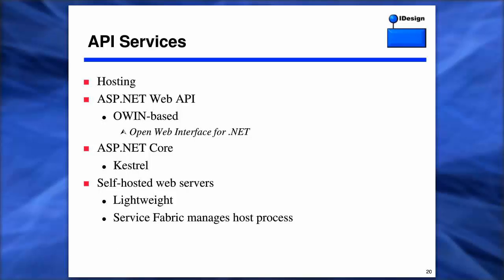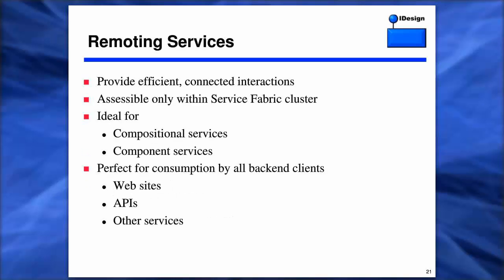Briefly on hosting specifics: ASP.NET Web API uses OWIN-based Katana-based hosting, which many of you are already familiar with. ASP.NET Core introduces the new hosting model for Kestrel. The Fabric supports both. These are self-hosted web servers — lightweight — and the Fabric manages the host process. What we're going to look at today is the other type of Reliable Services: remoting services. They're called remoting because they provide a very simple, straightforward programming model, and they're best for compositional or component-based services.